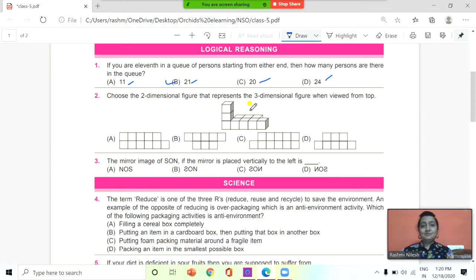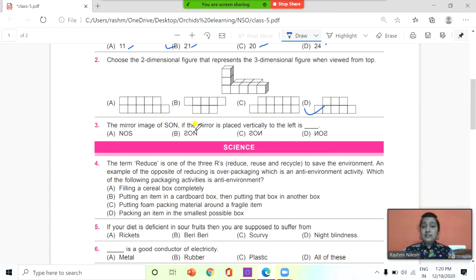The answer is D. Next question: the mirror image of Sun S-O-N if the mirror is placed vertically to the left. Look at the options here: option A, option B, option C, and option D. So what will be the mirror image of Sun when it is placed vertically to the left? And the answer is D.